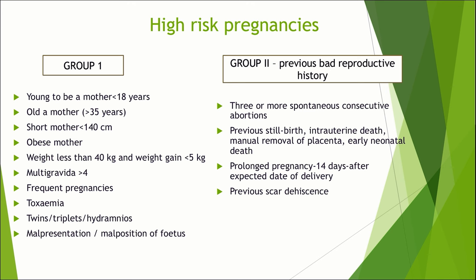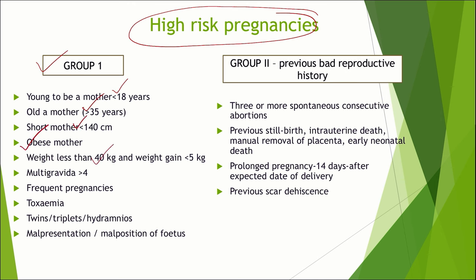What are all the high-risk pregnancies? The at-risk approach means there are certain groups of people where the presence of complications will be at a higher incidence. In pregnancy, we call these high-risk pregnancies, classified into 4 groups. Group 1 is based on baseline parameters such as age less than 18 years or more than 35 years; height of the mother less than 140 cm; obese mothers; weight less than 40 kg; overall weight gain less than 5 kg; multigravida greater than 4; frequent pregnancies; toxemia; multiple pregnancies; and malpresentation or malposition of the fetus.